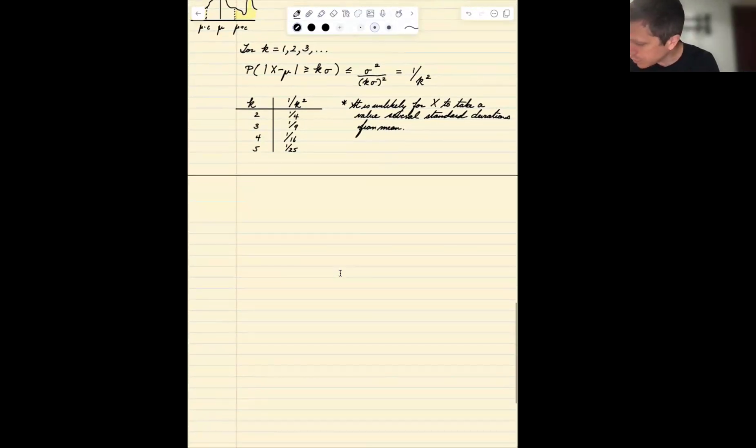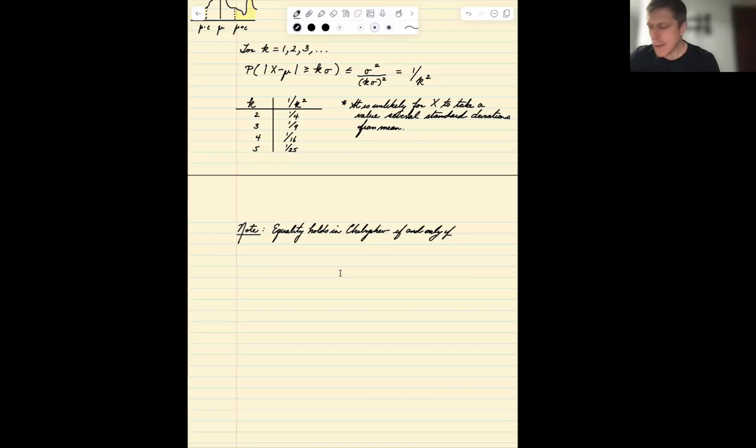Further consequence, just to record here, is that there is equality in Chebyshev. So we get equality to hold in Chebyshev if and only if x takes three values: it can only equal mu minus c, mu, or mu plus c, such that it's symmetric. So the probability that x equals mu minus c...